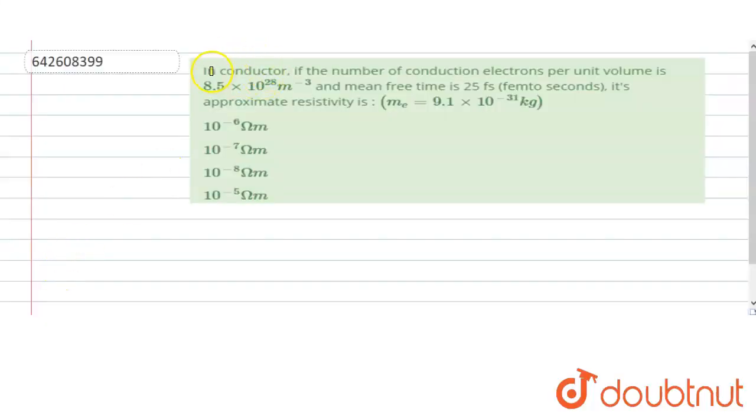Hello, the problem states that in a conductor, if the number of conduction electrons per unit volume is given by 8.5 × 10²⁸ per meter cube and mean free time, which is defined as the time taken by the electron between two collisions, is 25 femtoseconds.